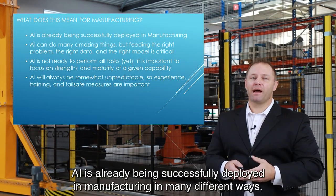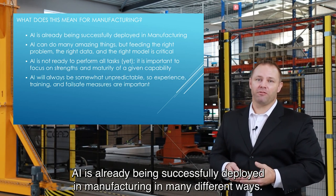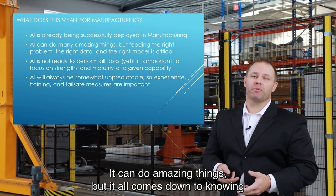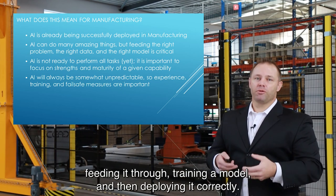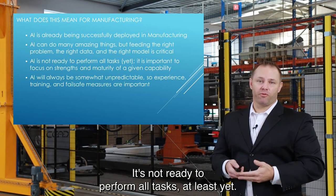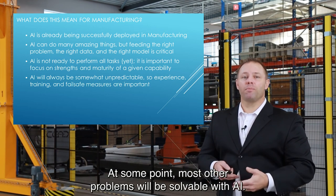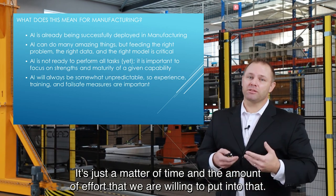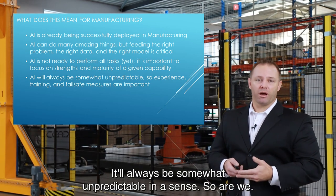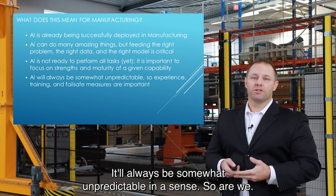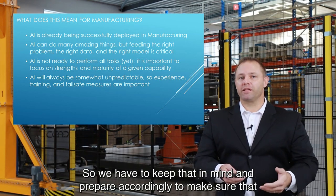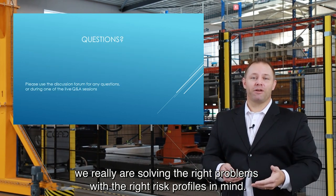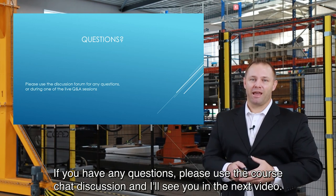What does this mean for manufacturing? AI is already being successfully deployed in manufacturing in many different ways. It can do amazing things, but it all comes down to knowing what problem you're solving, making sure you have the right data, training a model, and deploying it correctly. It's not ready to perform all tasks — at least not yet — but at some point most problems will be solvable with AI; it's just a matter of time and effort. It will always be somewhat unpredictable — in a sense, so are we — so we have to prepare accordingly and make sure we're solving the right problems with the right risk profiles in mind. If you have any questions, please use the course chat discussion and I'll see you in the next video.